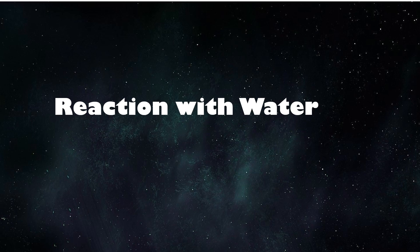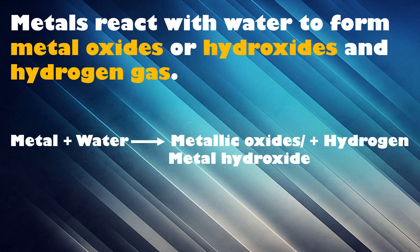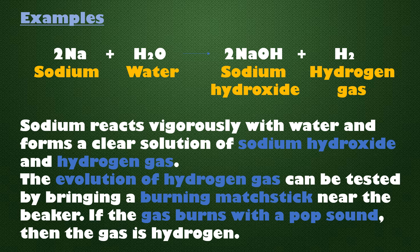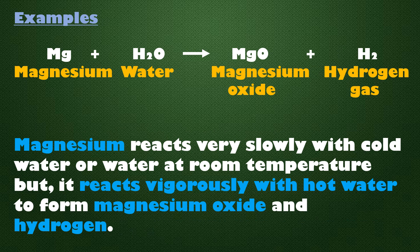Reaction with water: Metals react with water to form metal oxides or hydroxides along with the release of hydrogen gas. Sodium reacts vigorously with water and forms a clear solution of sodium hydroxide and hydrogen gas. The evolution of hydrogen gas can be tested by bringing a burning matchstick near the beaker — if the gas burns with a pop sound, then the gas is hydrogen. Magnesium reacts very slowly with cold water but reacts vigorously with hot water, forming magnesium oxide along with the evolution of hydrogen gas.